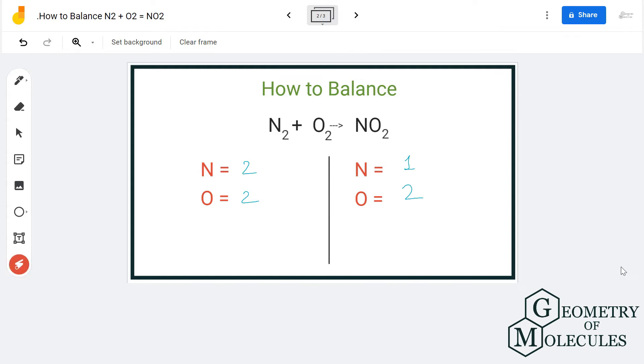So first we will try and balance out the nitrogen atoms on both sides and as you can see here that reactant side has two nitrogen atoms. So we will also make it two on the product side as well by multiplying this whole product by two.